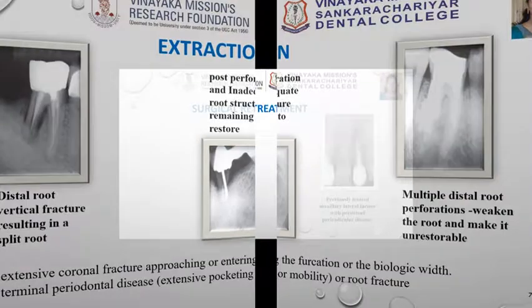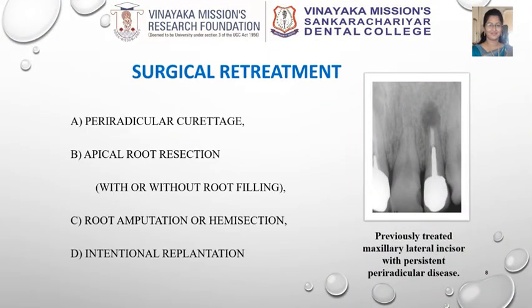This failed RCT case has a post and core along with the crown over it. Routine non-surgical retreatment will weaken the tooth structure due to unnecessary mechanical instrumentation. In such cases, surgery is a better option. Various surgical approaches are periradicular curettage, apical root resection, root amputation, and intentional replantation.